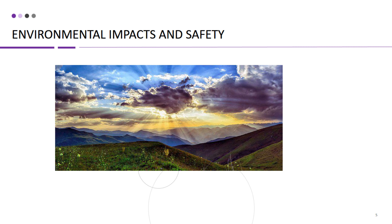Throughout the life cycle of a nuclear power plant, there are potential environmental impacts and safety considerations that need to be addressed. During the construction phase, potential impacts may include habitat destruction, soil erosion, and water pollution. The operational phase requires strict safety protocols and measures to prevent accidents, releases of radioactive materials, and protect workers and the public. Proper management of nuclear waste, including spent fuel, is crucial to avoid potential environmental and health risks.